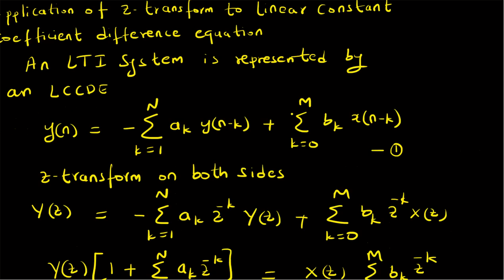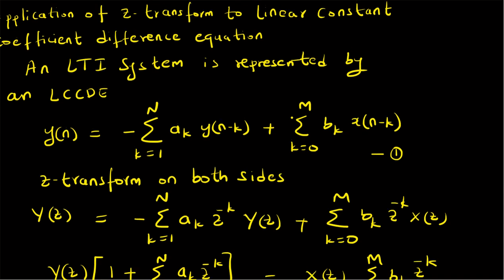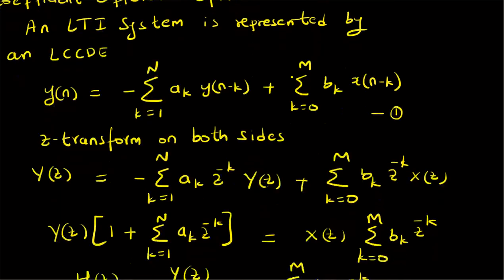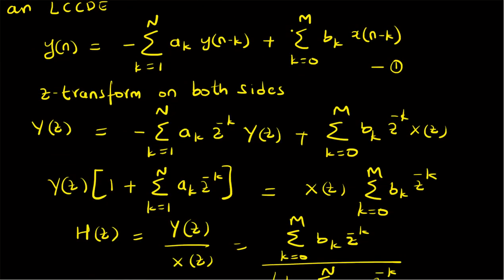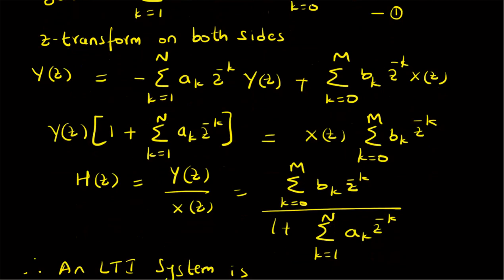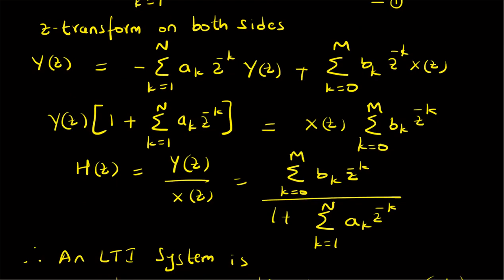In summary, a linear constant coefficient difference equation represents a linear time-invariant system where the output y(n) is a linear combination of the previous outputs and current and previous inputs. Applying the Z-transform yields the system function H(z), which is the ratio of the output to input Z-transforms and is a rational polynomial in z^(-1).